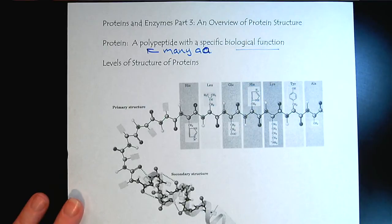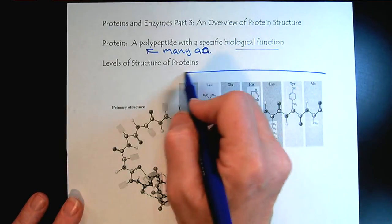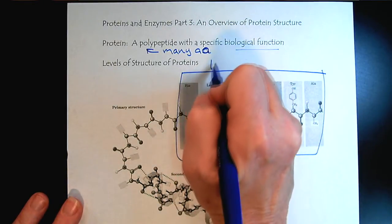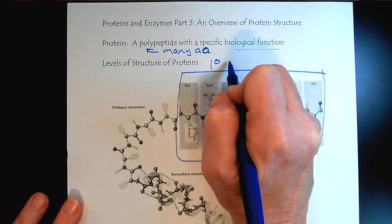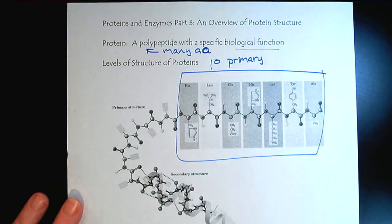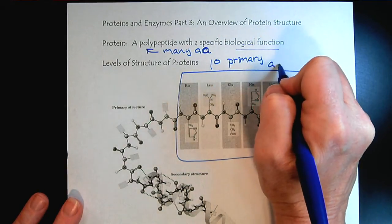The levels of protein structure - the first part is described right here. This is the amino acid sequence. The primary structure, by now I think everybody's familiar with the primary symbol. Primary is the amino acid sequence.